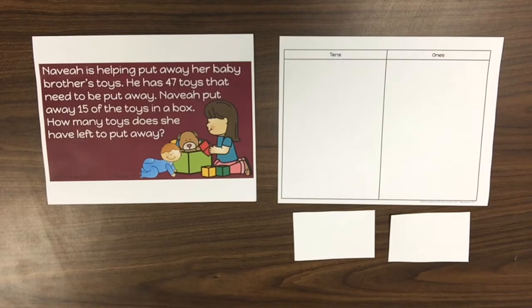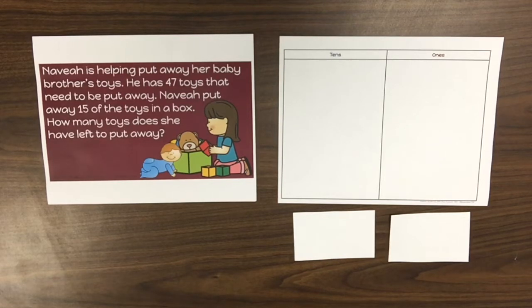This section of the second grade addition and subtraction unit focuses on subtracting using linking cubes with and without regrouping. For this section of the unit you will need linking cubes, place value charts, and number lines.